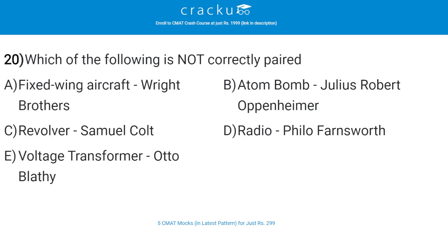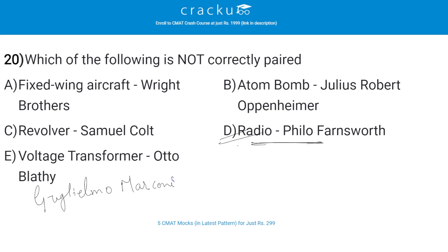Which of the following is not correctly paired? Fixed wing aircraft was made by the Wright Brothers. Atom bomb made by Julius Robert. Revolver made by Samuel Colt. Radio by Philo Farnsworth — this is not correctly paired. The radio was actually discovered by Guglielmo Marconi, a young Italian experimenter who took out the first wireless telegraph patent in England in 1896.